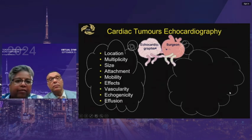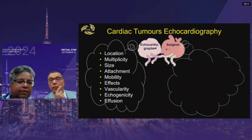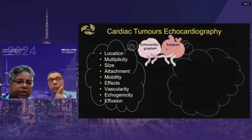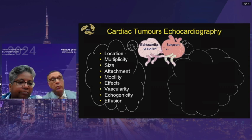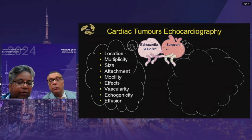From an echocardiographic point of view, we specifically look at location, multiplicity, size, attachment site, mobility, any obstructive effect on valves, and vascularity — which may be assessed by lowering the Doppler Nyquist limit or using contrast transthoracically. We also describe whether the tumor is echogenic or non-echogenic, whether it contains calcium, and whether there is any pericardial effusion.